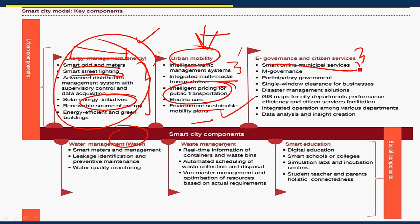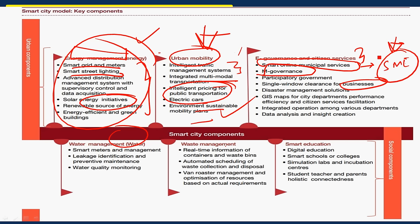In e-governance and citizen services, smart cities offer online municipality services such as online bill payment and online tax registration, mobile governance using mobile technology to provide services to citizens, single window clearance systems for businesses like small and medium enterprises, city management solutions using GIS master planning, and integrated operations among various departments — ensuring departments do not work in silos.